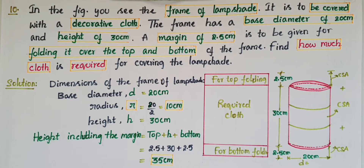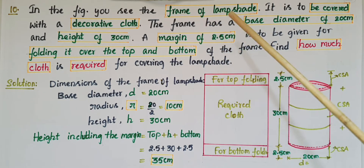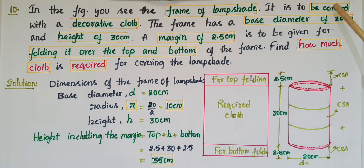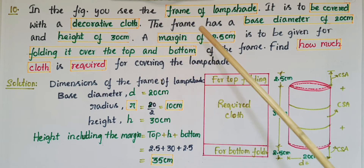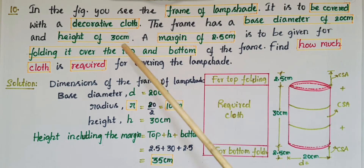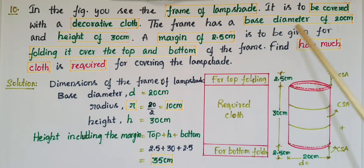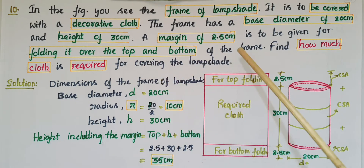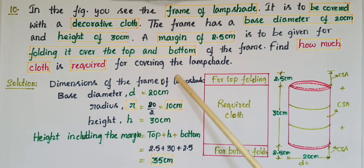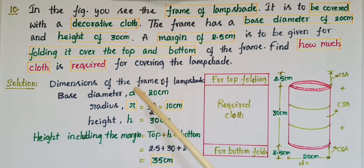Hello everyone. Today I am going to tell the solution of problem 10 from Exercise 13.2 on surface areas and volumes from NCERT Class 9. In the figure you see the frame of a lampshade. It is to be covered with a decorative cloth. The frame has a base diameter of 20 centimeters and a height of 30 centimeters. A margin of 2.5 centimeters is to be given for folding it over the top and bottom of the frame. Find how much cloth is required for covering the lampshade.